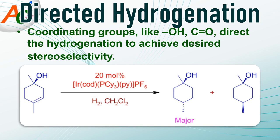With the Crabtree's catalyst, coordinating groups like OH and C=O direct the hydrogenation to achieve desired stereoselectivity, especially in cyclic compounds. The hydrogens are added from the same face as the directing groups. As in this example, the product with the 4-methyl group trans to the OH group is the major product, because the hydrogens are added from the same face as the OH group, making the 4-methyl group move to the opposite face. It is worth noting that the other product where the 4-methyl group is cis to the OH group would be the major product if palladium on carbon in ethanol is used as catalyst.